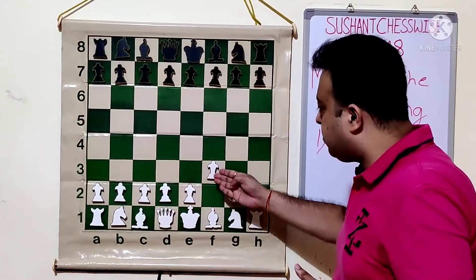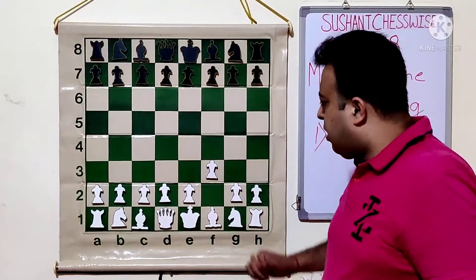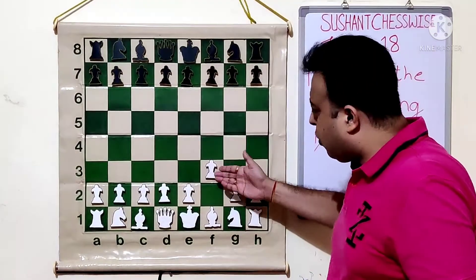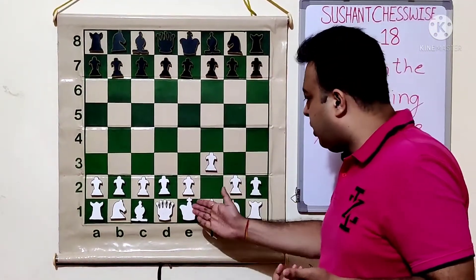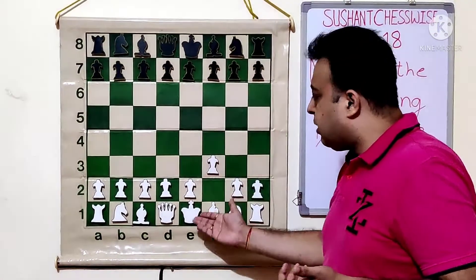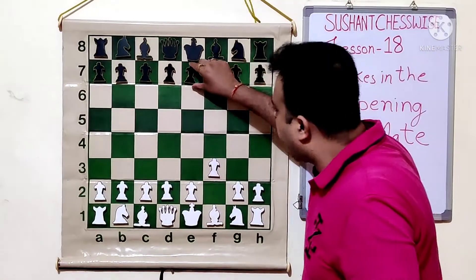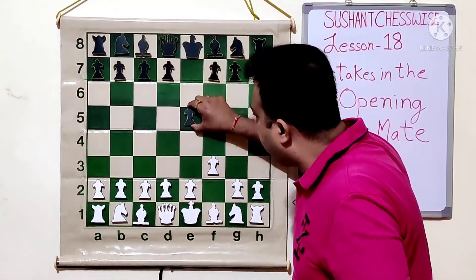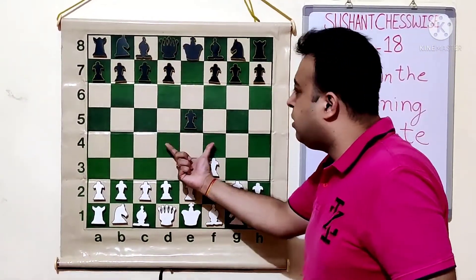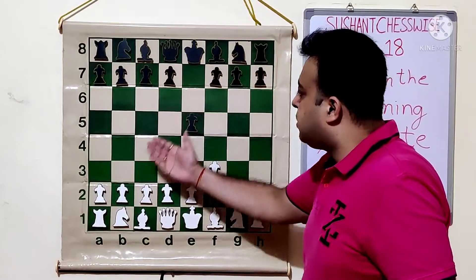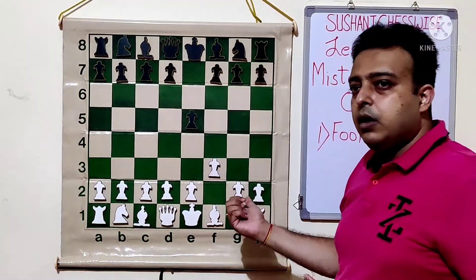White played his pawn to f3, which is a very bad move. The knight is not able to come out because of the pawn, and the king's diagonal is weak. Black played the pawn to e5 — he controls the center, opens his bishop, and opens his queen.